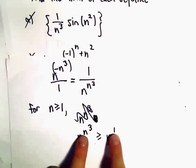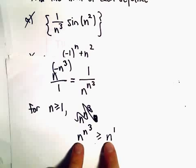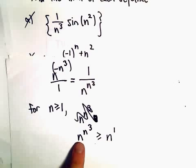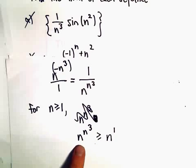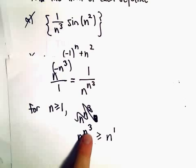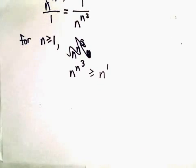Imagine if you plug in 1. You'll have 1 to the first on the left and 1 to the first on the right. If you plug in 2, for example, you're going to have 2 raised to the power of 2 cubed. So 2 to the 8 is certainly greater than or equal to 2. Again, if you plug in 3, 3 raised to the 3 cubed or 3 raised to the 27 power is certainly greater than or equal to 3. So I think this is pretty clear.